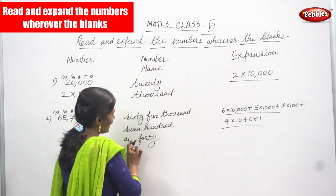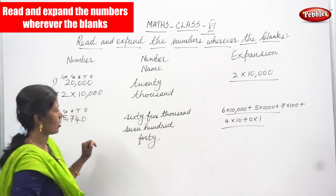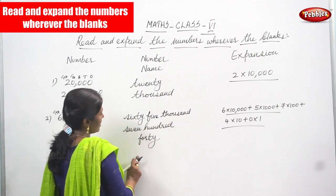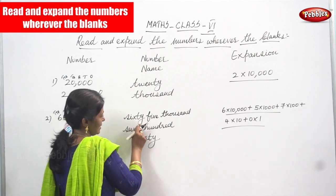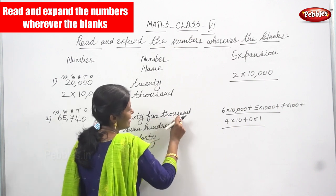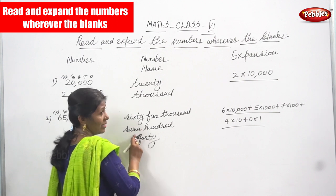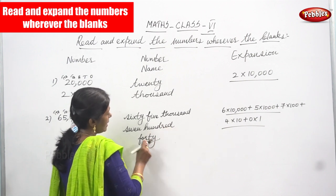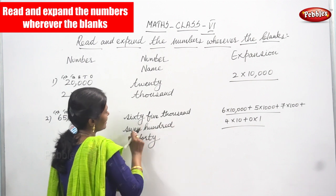If you want you can write 'forty' or just '40' — that is enough. So 65,740 in words is: SIXTY (S-I-X-T-Y), FIVE (F-I-V-E) THOUSAND (T-H-O-U-S-A-N-D), SEVEN (S-E-V-E-N) HUNDRED (H-U-N-D-R-E-D), FORTY (F-O-R-T-Y). So that is 65,740.